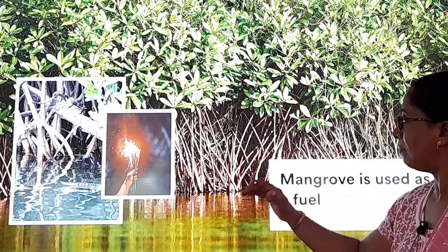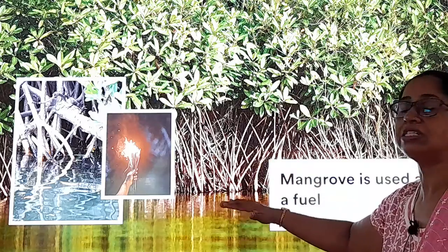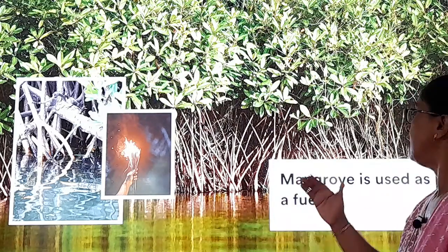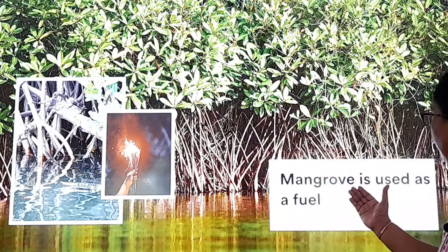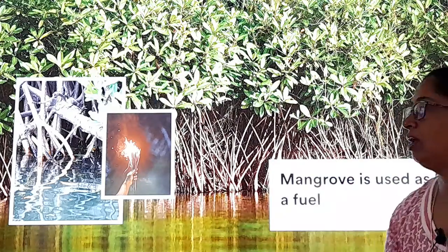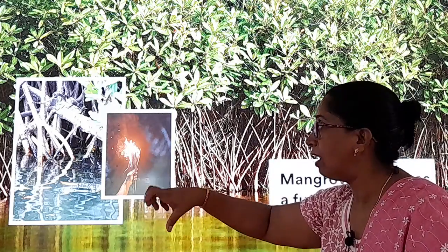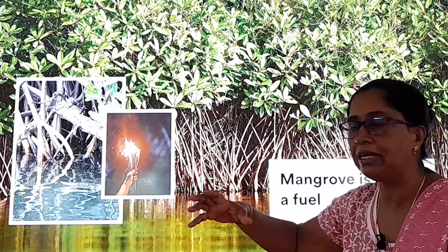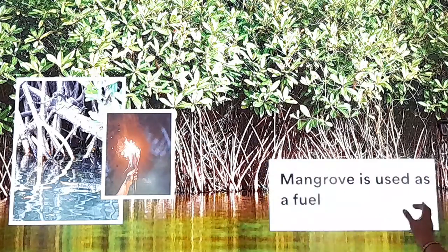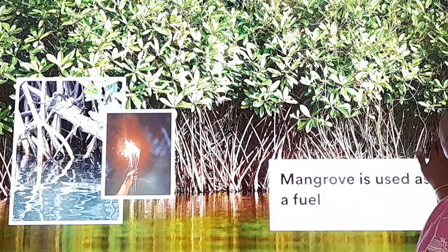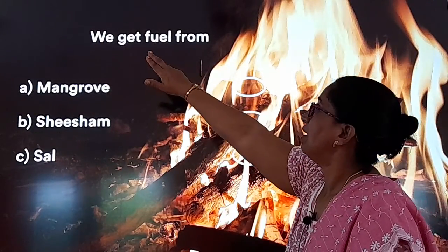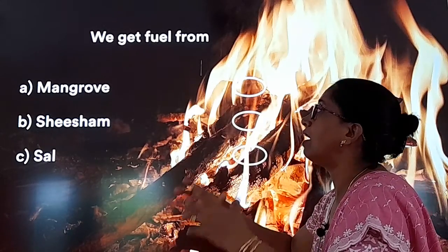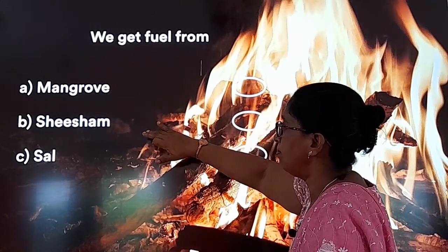Mangrove — dekha aapne? Paani ke paas ugta hai. This plant grows near the water — jahaan nadi ka kinara hota hai, uske paas yeh plant ugta hai. Say the name — mangrove. Mangrove is used as fuel — fuel yane jalane ke kaam mein, aag jalane ke kaam mein aata hai. Lakdi se aag lagate hain na — khana pakane ke liye, roshni dene ke liye. So we get fuel from — mangrove, shesham, or sal? The answer is mangrove!